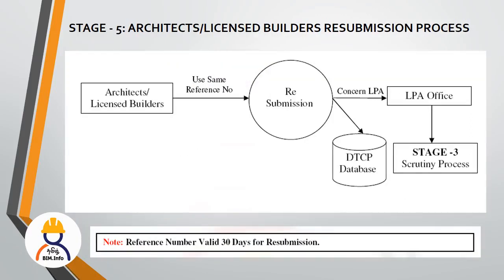The first step in resubmission is to create a new reference ID on the DTCP website. This is the fifth stage. If your plan was rejected, you can correct the reason and enter the same login on the DTCP website to resubmit. The third stage is to check the EDCR software again. The first time you have a reference number, you can activate it for 30 days. If you want to resubmit, you can create a new ID and upload the new login through the EDCR process.